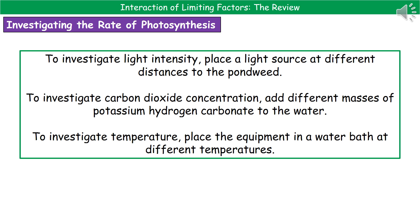So make sure you can explain why certain things are an advantage or an improvement in these different experiments. One factor we could look at is light intensity — just place a lamp next to the pondweed and then move it further and further away, recording the amount of gas made at each distance. If you're investigating how carbon dioxide concentration affects it, you can add different masses of potassium hydrogen carbonate to the water, because that creates the CO2 for the plant. If you're investigating temperature, put the equipment in a water bath, use different temperatures, and record the amount of gas made each time.